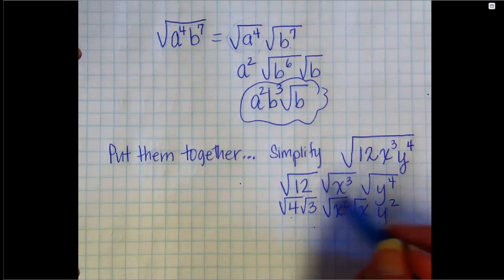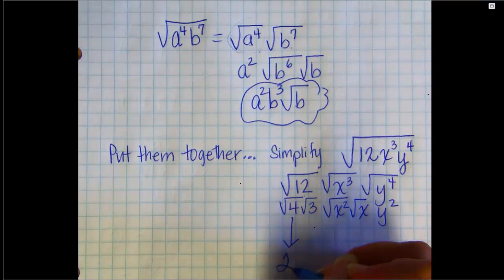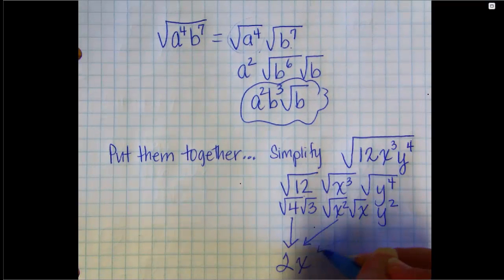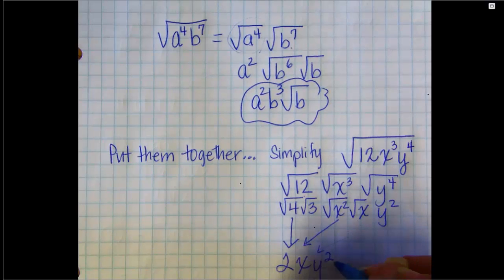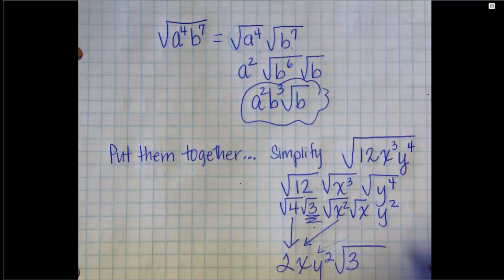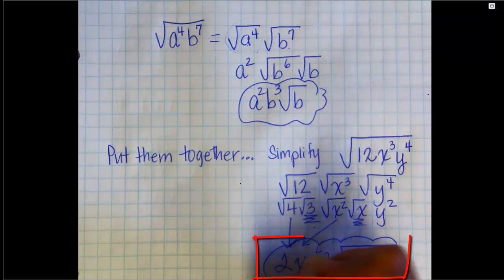And then you clean it up. The perfect stuff goes out front. The square root of 4 is 2. The square root of X squared is X. Bring your Y squared down. And then you make one radical, one square root for your leftovers. 3 wasn't perfect, that stays inside. X wasn't perfect, that stays inside. And there you go.